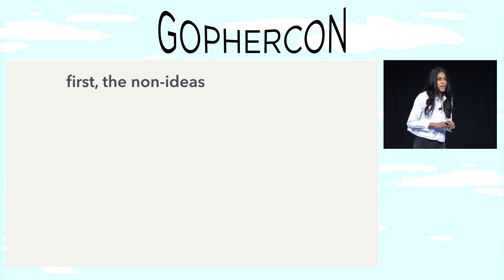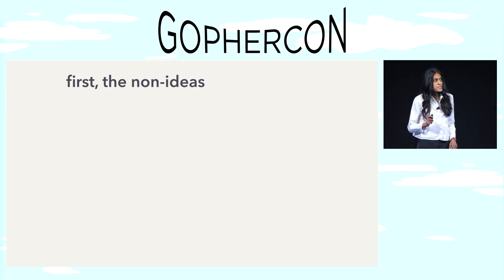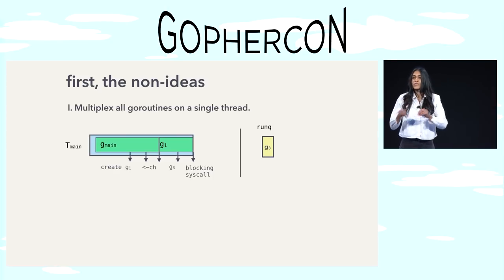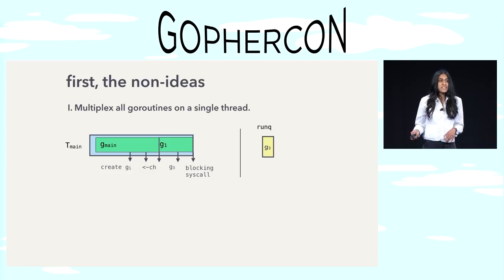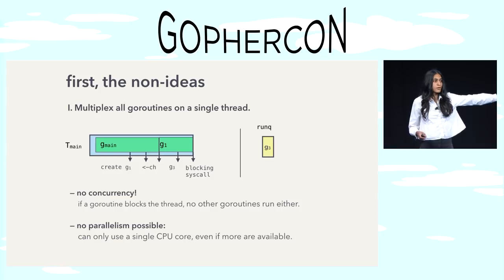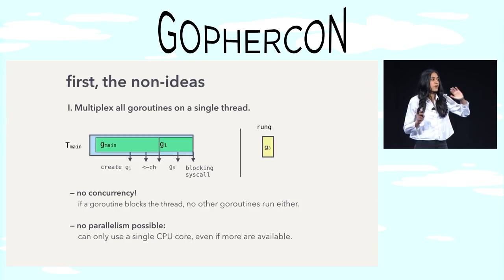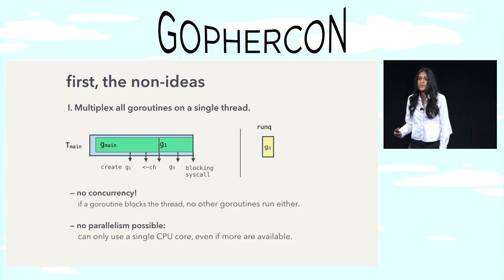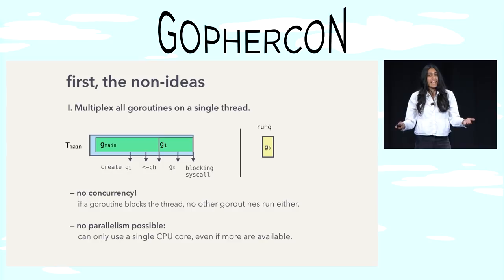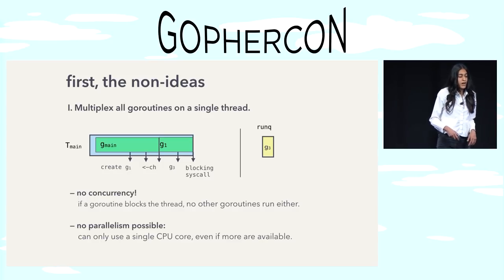Let's start with the non-ideas first — things we can throw out of the window. The first is multiplexing all Go routines onto a single kernel thread. This is N:1 scheduling. This doesn't give us any concurrency — if that Go routine performs a blocking call, the thread will block, which means all the other Go routines don't get to run. The other problem is that this doesn't give us parallelism — we're restricting ourselves to using a single thread even though the hardware can support N threads.